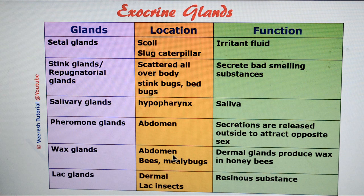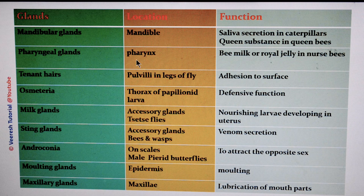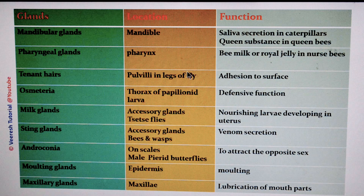In bees, wax glands are located on the third to seventh abdominal segments ventrally. Leg glands are dermal glands that secrete resinous substances in lac insects. Mandibular glands are present on the mandibles; they secrete saliva in caterpillars and queen substance in queen bees. Pharyngeal glands present on the pharynx secrete bee milk or royal jelly in nurse bees. Tenent hairs are present on the pulvilli in the legs of houseflies and help in adhesion to surfaces. Osmoteria are located on the thorax of papilionid larvae and serve a defensive function.